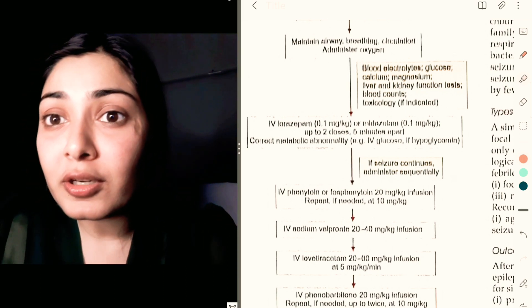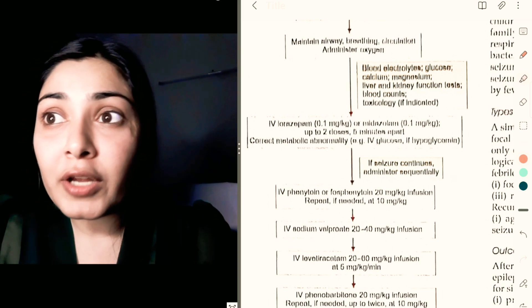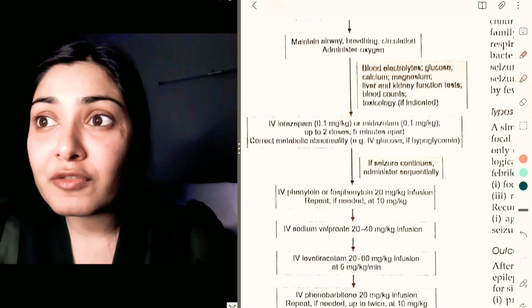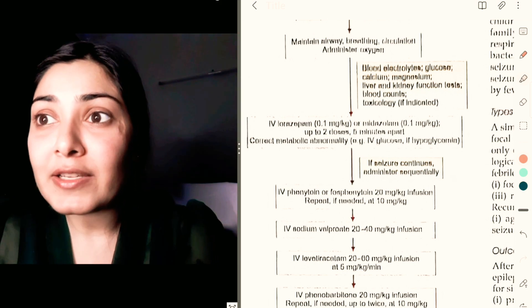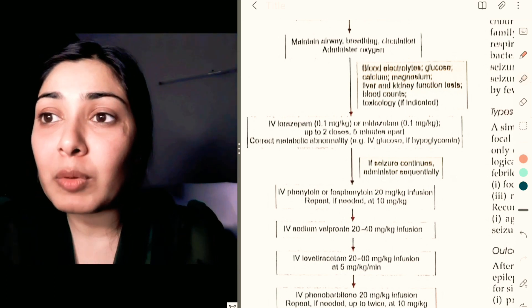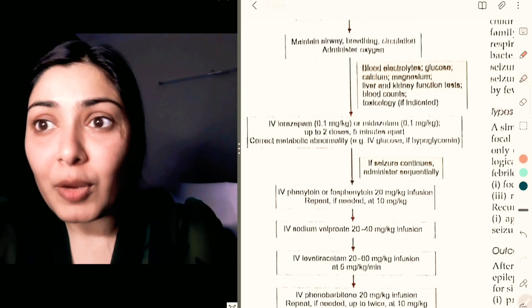Any acute metabolic derangement—you check electrolytes, glucose, calcium, magnesium, LFTs, blood counts, and toxicology if indicated. You abort the seizure by using lorazepam or midazolam. You can give them up to two doses, six minutes apart, and correct the metabolic abnormality with IV glucose or IV calcium.